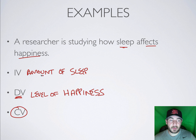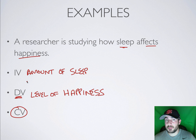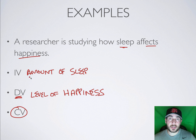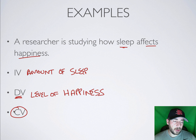Confounding variables might include: maybe you got 10 hours of sleep, but those 10 hours were during the day when you usually sleep at night — so the time you got your sleep was different. If we're just measuring sleep, maybe it wasn't quality sleep — maybe you woke up every hour because you have a cold. So confounding variables are just stuff that gets in the way.